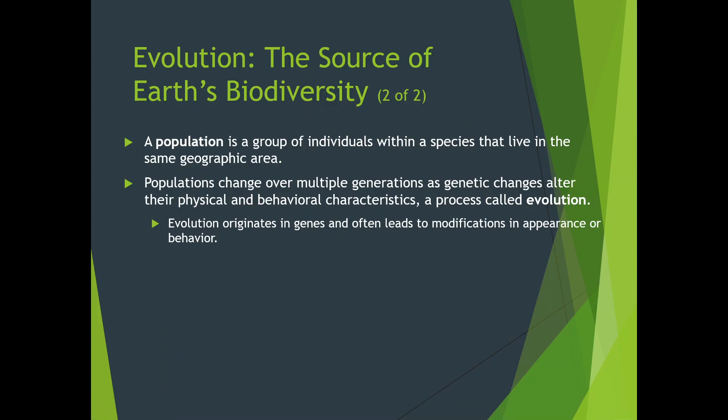Inside a species we have what's called a population — a group of individuals within that species. Populations change over multiple generations with genetic changes to physical and behavioral characteristics, and this is called evolution. Every once in a while there's a mutation in the genes that gives a species an advantage in the ecosystem. That advantage gets passed on more and more within the population, but it has to be a beneficial change — if it's not beneficial, those traits won't survive.